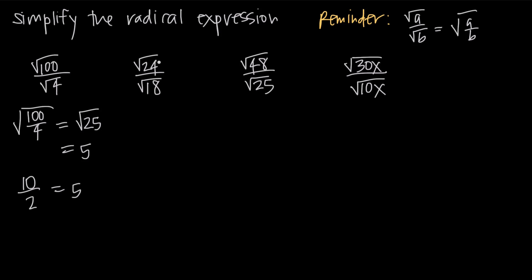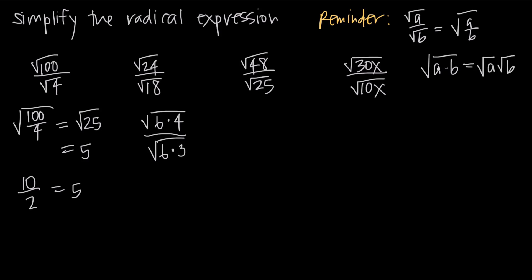Let's look at a second example: the square root of 24 over the square root of 18. We'll deal with the square roots separately. The square root of 24 is the same as the square root of 6 times 4, and the square root of 18 is the square root of 6 times 3. Using the rule that the square root of a times b equals the square root of a times the square root of b, this becomes the square root of 6 times the square root of 4 in the numerator, divided by the square root of 6 times the square root of 3.